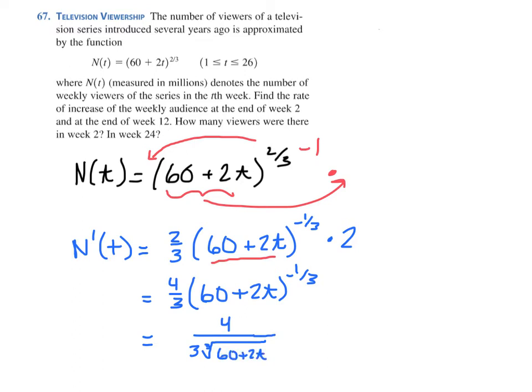If you're going to write this in radical form instead of power form, it'll look like 4 over 3 times the cube root of 60 + 2t. A lot of times it's easier to do a calculation when it's written like this. That negative 1/3 is a cube root, and it ends up in the denominator because the sign is negative. You're welcome to leave it as 4/3 times (60 + 2t)^(-1/3) and just use that on your calculator.